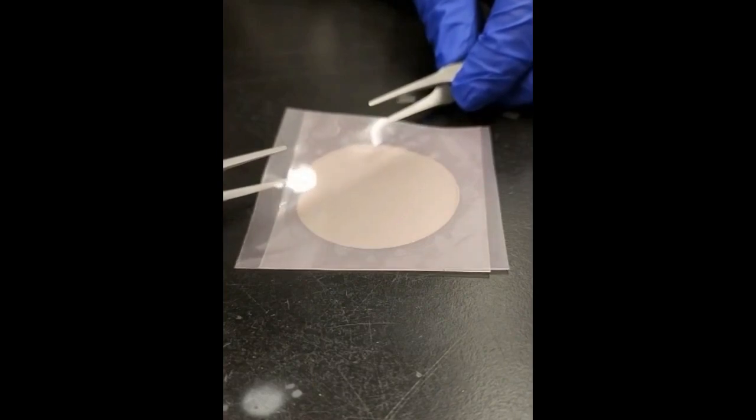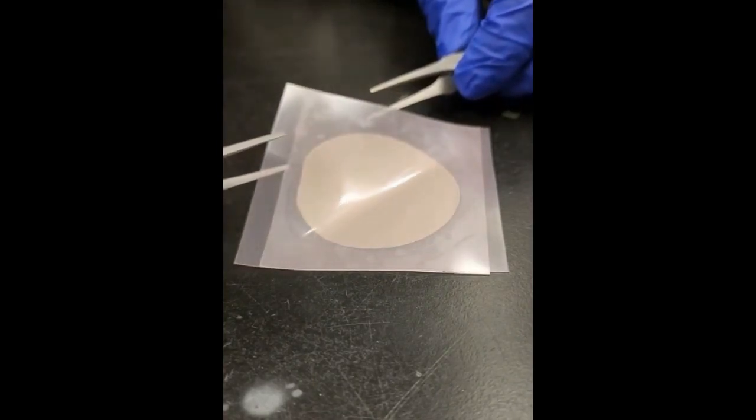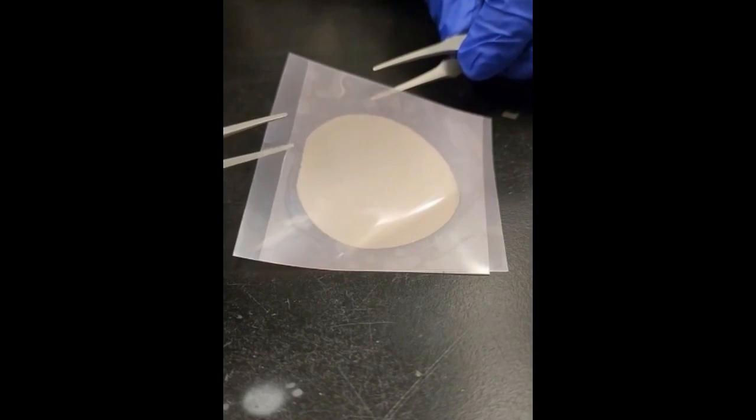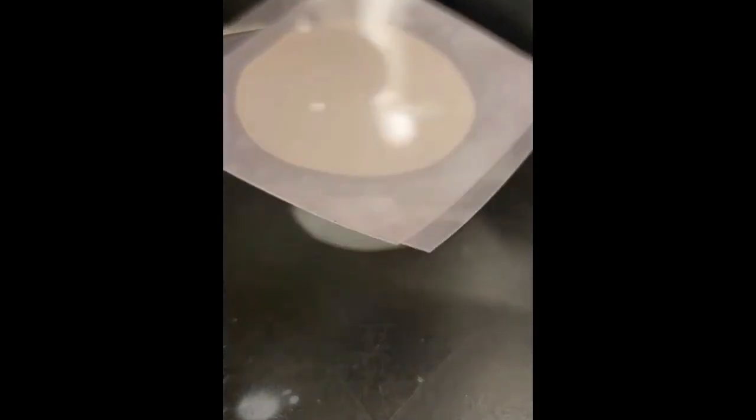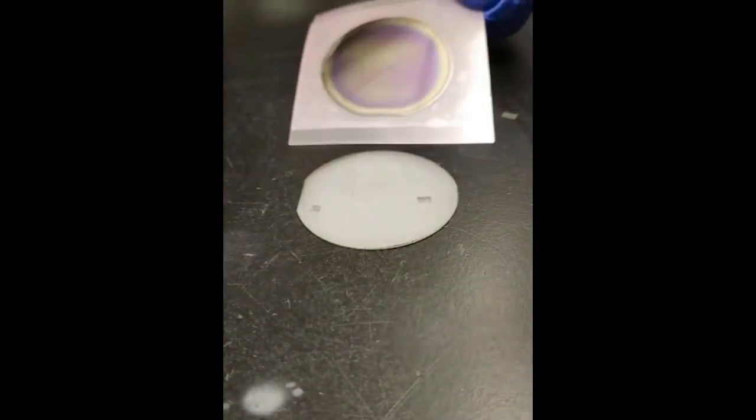The team previously developed a method to grow and peel away perfect two-dimensional single-crystalline material from wafers of silicon and other surfaces, an approach they call 2D material-based layer transfer, or 2D LT.